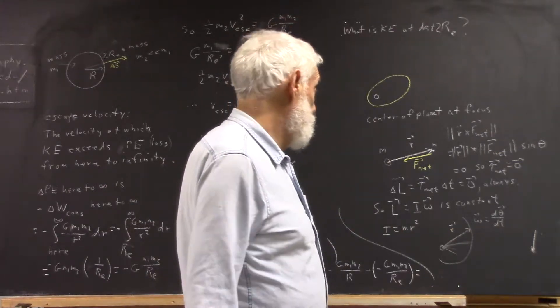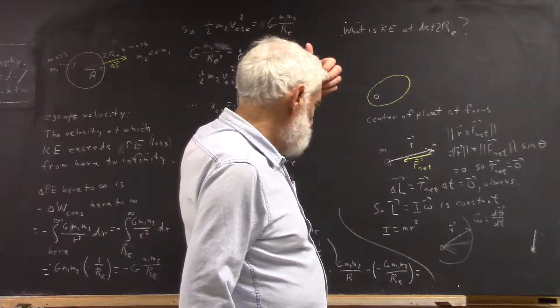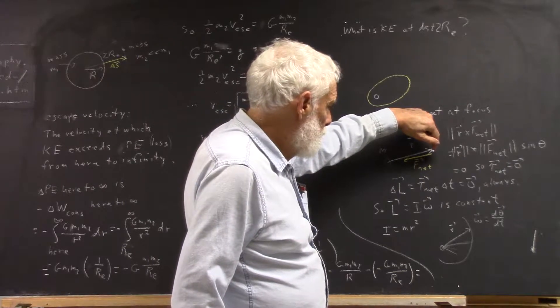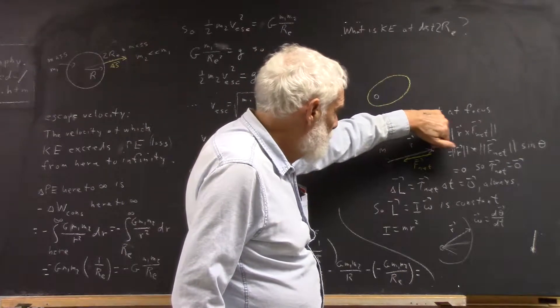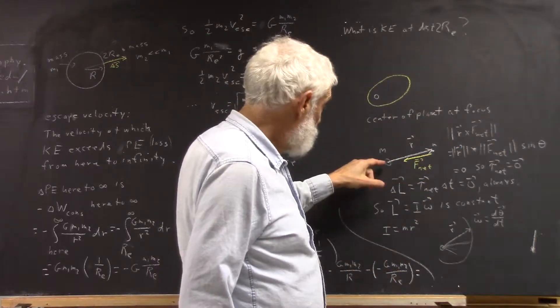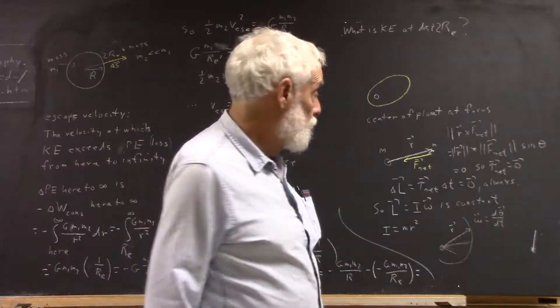You can see this in any number of ways. If you think of the fact that the moment arm is the distance of closest approach of the line of this force to the center of the planet, well, the line of this force goes through the center of the planet. That distance is zero. Your torque is therefore going to be zero.